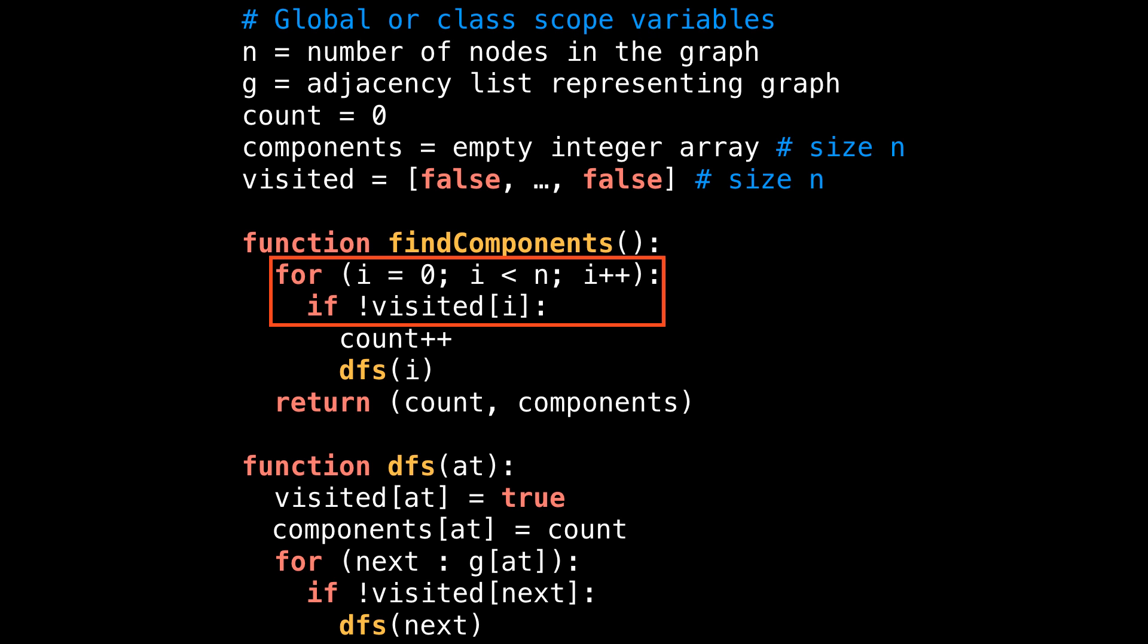Inside the find components method, we loop over every node and check if the current node has been visited or not, and then execute some logic. This depth first search variant differs slightly from the previous in that we execute a depth first search for every unvisited node. When we actually do the depth first search, we visit nodes and mark them as visited, so we never revisit the same node more than once. We either skip over a node because it's been visited in this for loop, or start a depth first search there. If we start a new depth first search, we increment the count variable and keep track of how many depth first searches we have done.